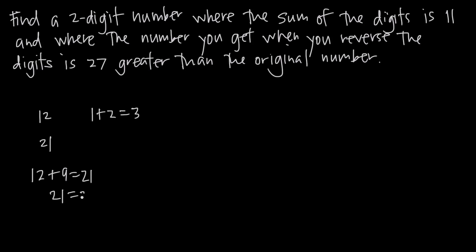They're asking us for this original number where the sum of the digits isn't 3, it's 11, and when we reverse the digits in the number, this value is actually 27 greater than our original number, not 9 greater like in this example. What is this number going to be? How are we going to figure that out?